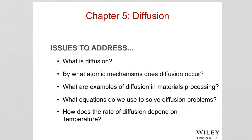We're going to cover diffusion in this chapter. Key questions include: What is diffusion? What types of diffusion are there? What are examples of diffusion in material processing? And what are the mathematical equations we use to describe atomic motion? Temperature is very important in determining the rate of diffusion because diffusion is a thermally activated process.